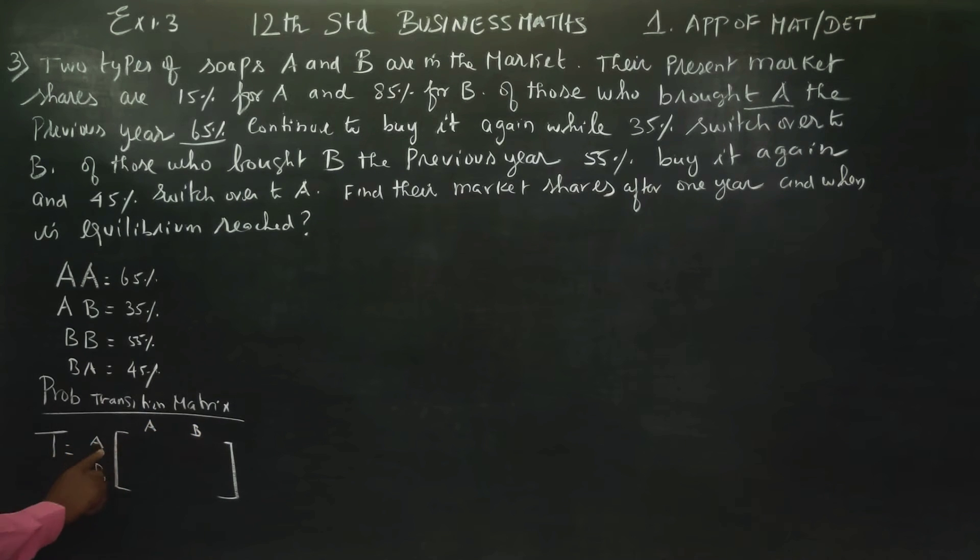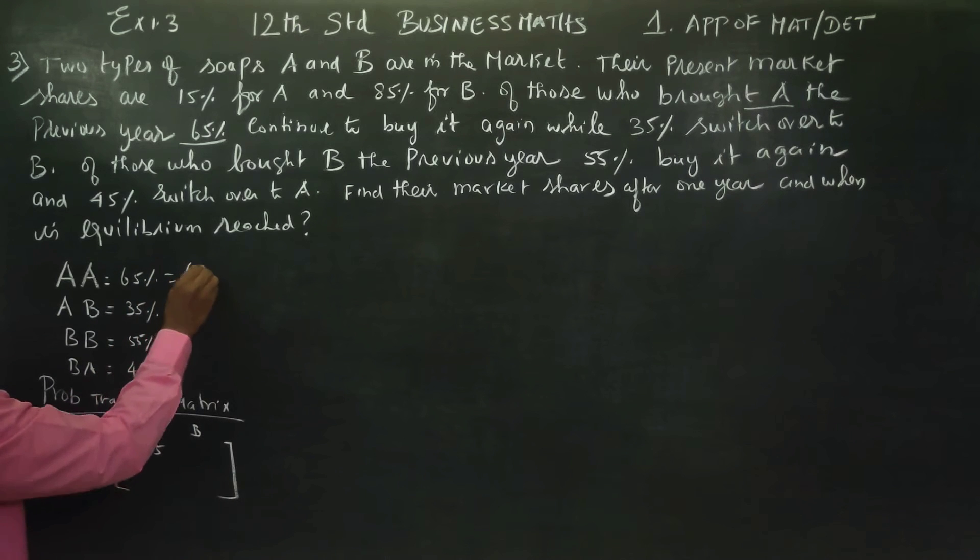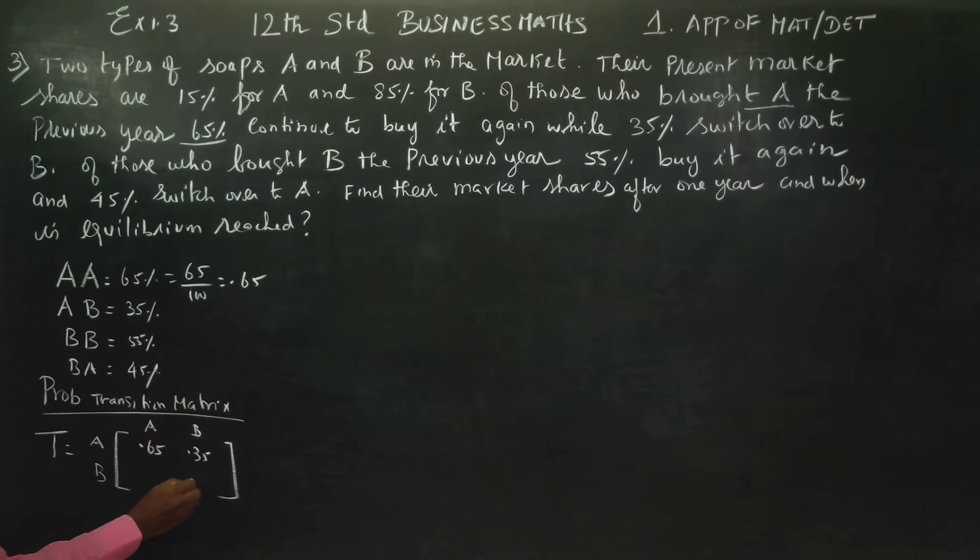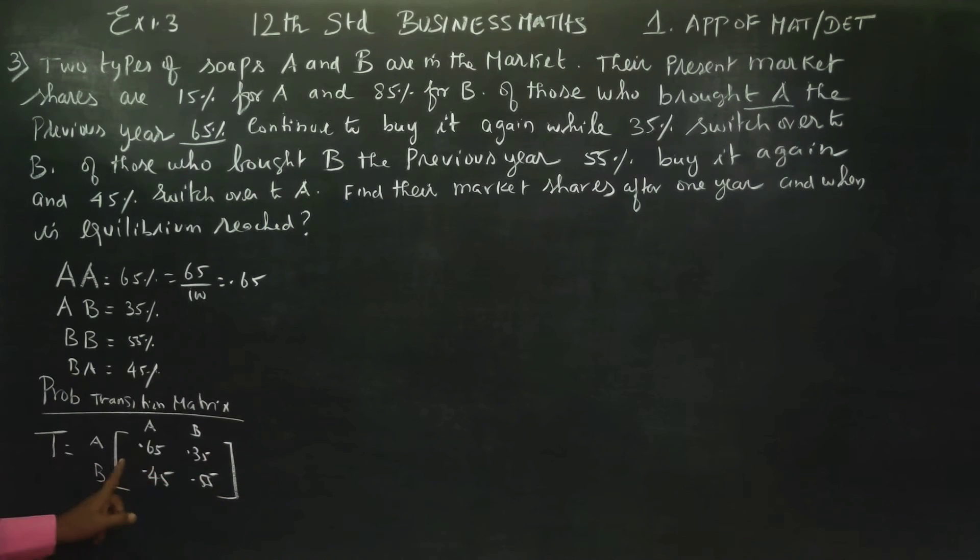A to A is 65%, A to B is 35%. B to A is 45%, B to B is 55%. We divide this as decimals: 0.65, 0.35, 0.45, 0.55.